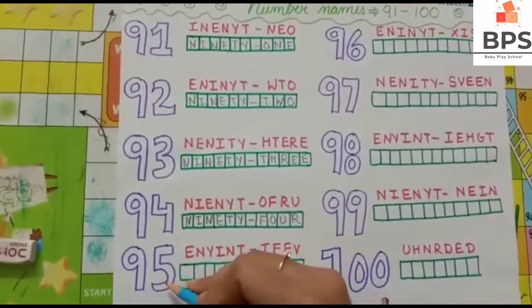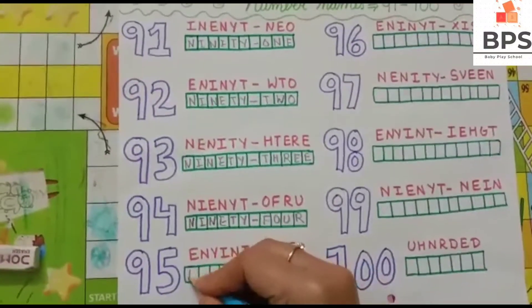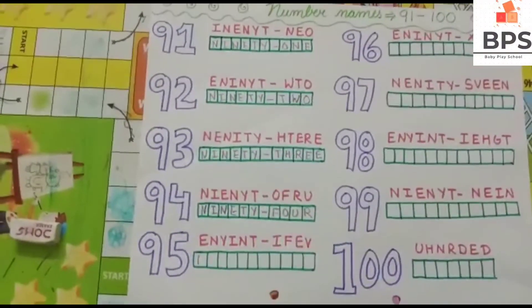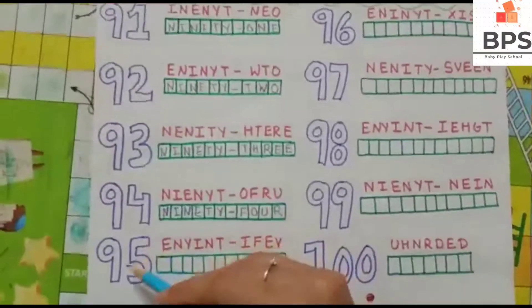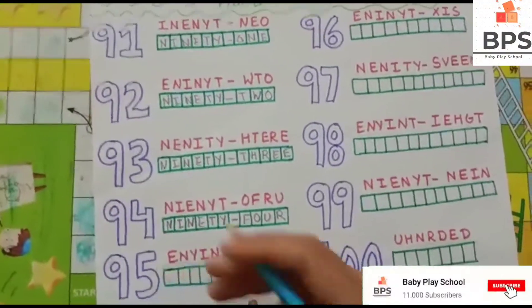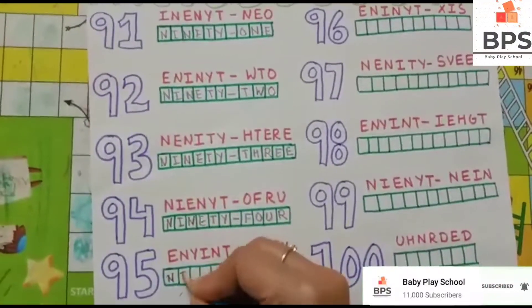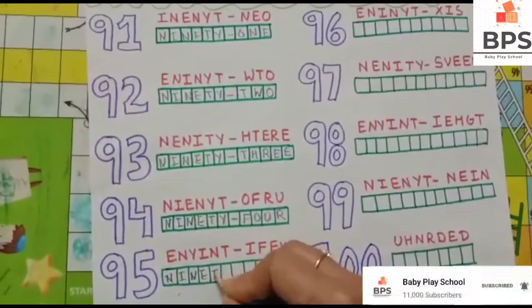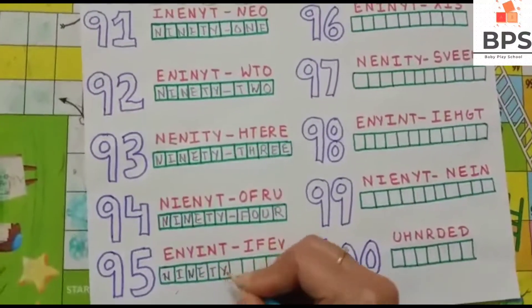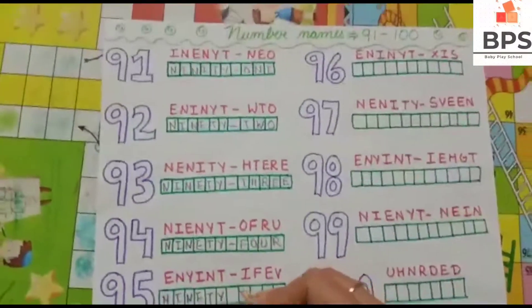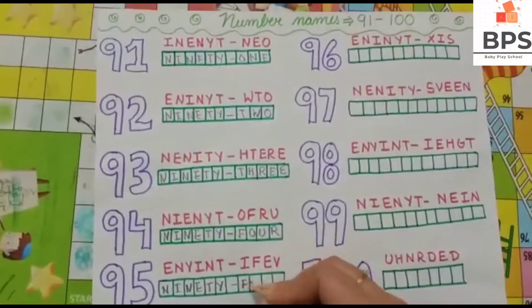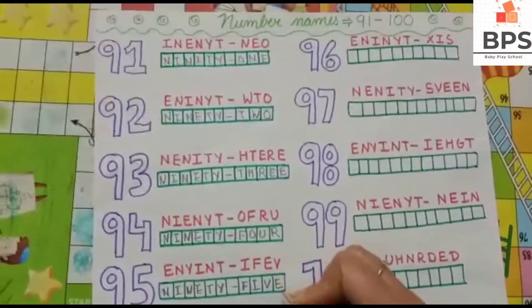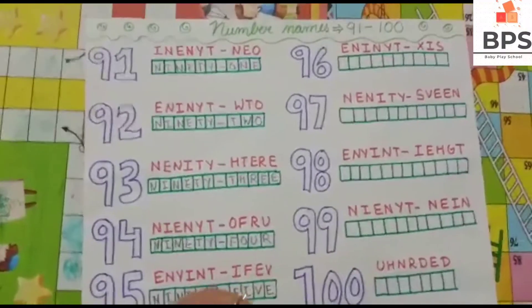N, 95, 95, 95 — N-I-N-E-T-Y, 90, F-I-V-E, 5, so 95.